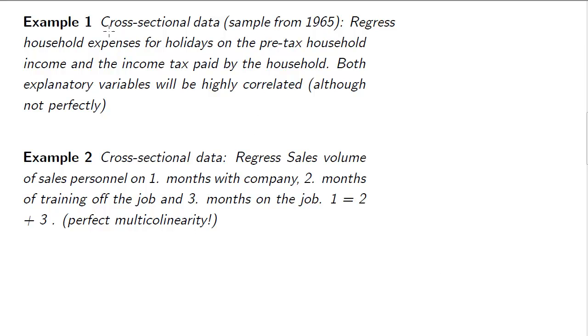Now, two examples where we can expect multicollinearity. Here, we're having cross-sectional data. Our dependent variable is household expense for holidays, and we regress that on pre-tax household income and the amount of income tax paid by households, because we think both of these are measures of wealth which explain holiday expenditure. Let's call these A and B.